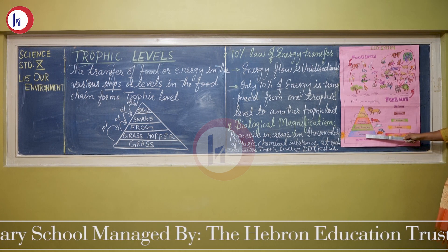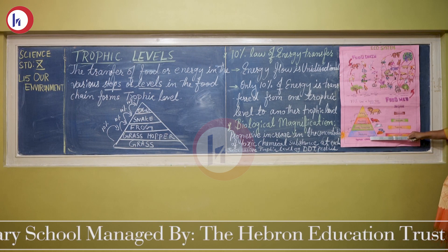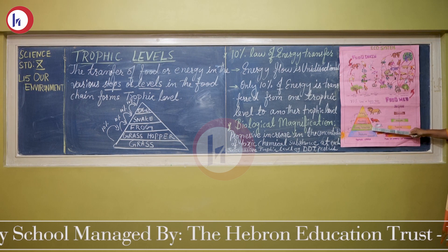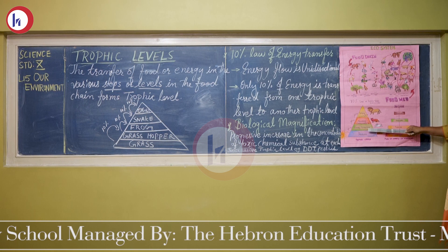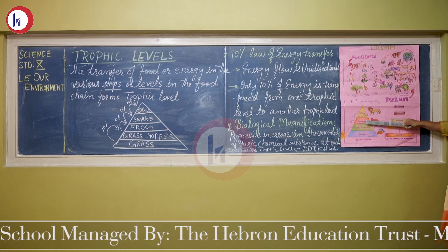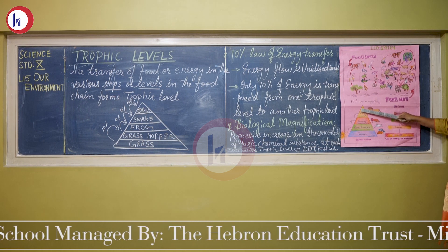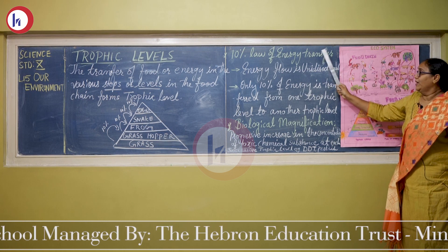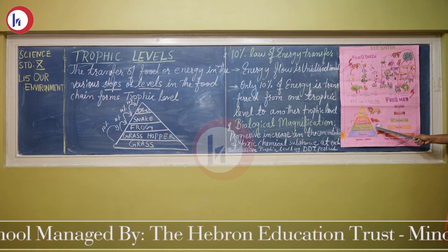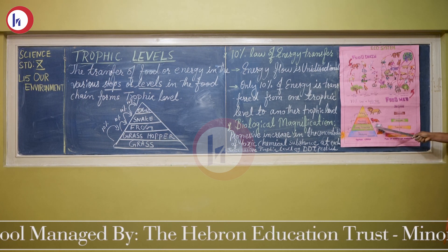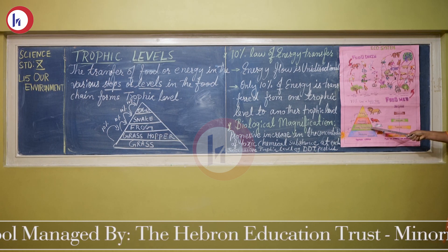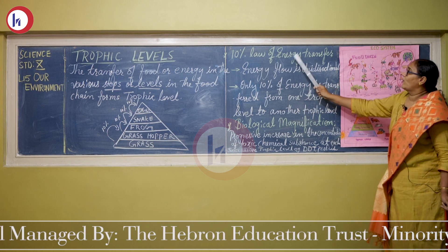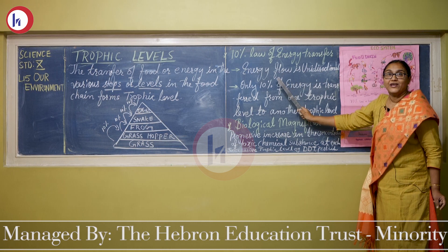For example, a carrot plant (producer) has 10,000 kilojoules. When eaten by a rabbit (primary consumer), the rabbit gets only 1,000 kilojoules. When the rabbit is eaten by a secondary consumer, only 100 kilojoules are transferred. The rabbit uses 90% of energy in activities like jumping, hopping, breathing, respiration, and reproduction. Only 10% is transferred to the next trophic level — that is the 10% law of energy transfer.